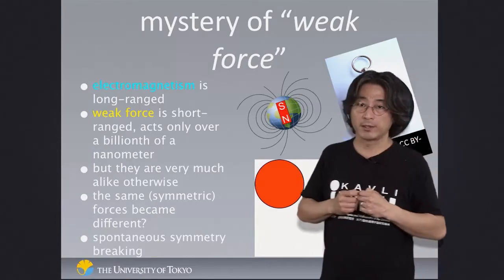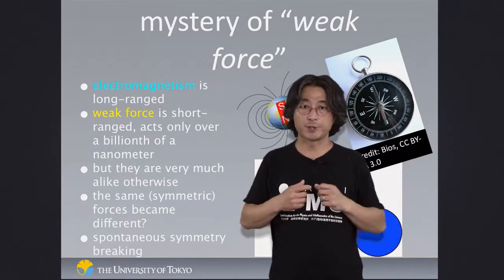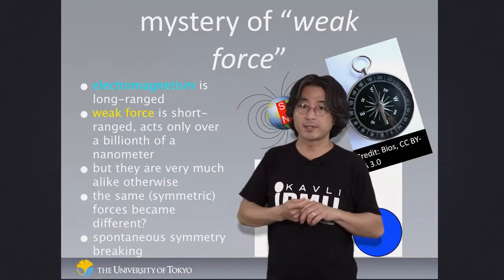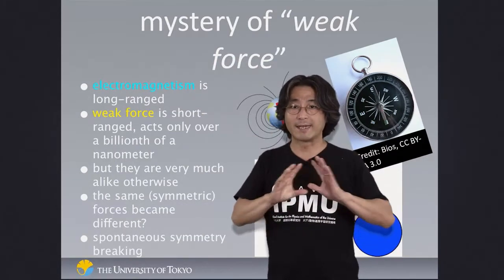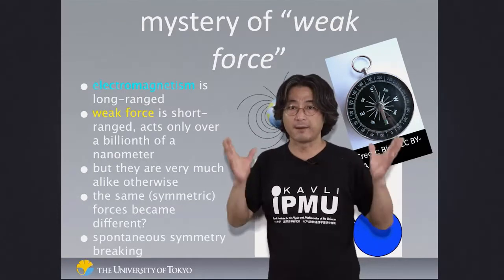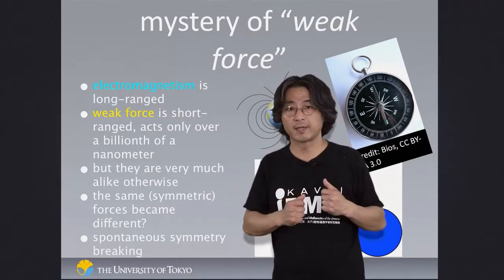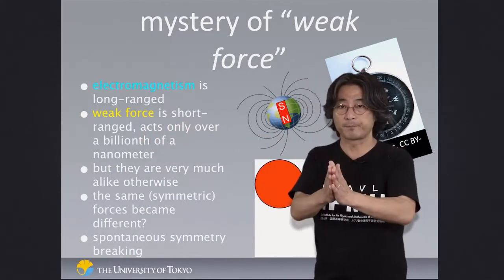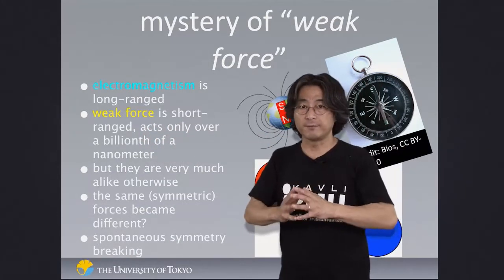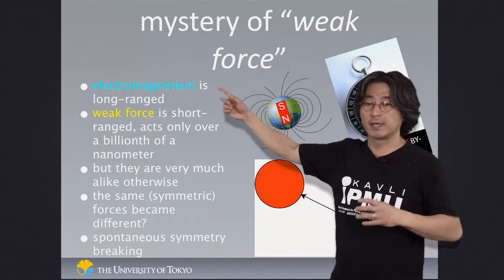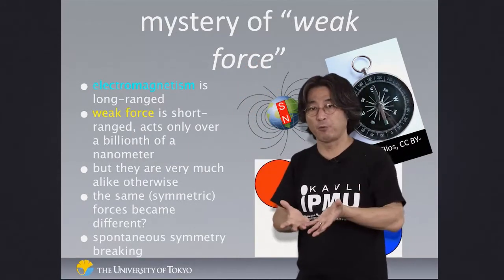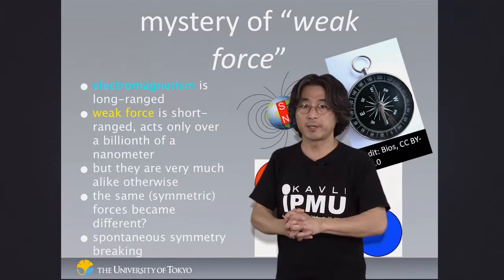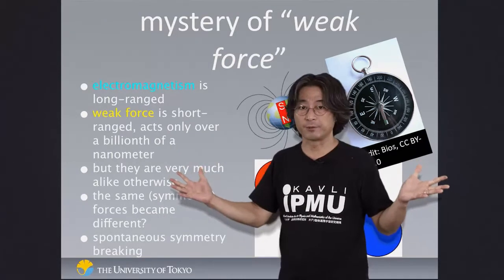But as far as we can tell, people have studied the nature of electromagnetism and the weak force to exquisite accuracy, and to the extent we looked, they appear exactly identical to each other. They are very similar forces, except for the fact that one is long-ranged and the other is short-ranged. So it looks as if electromagnetism and the weak force used to be the same kind of force.